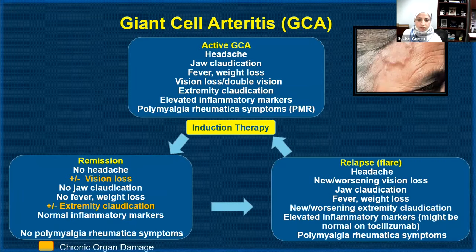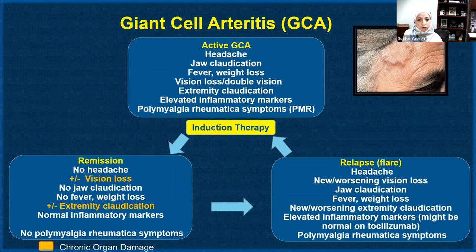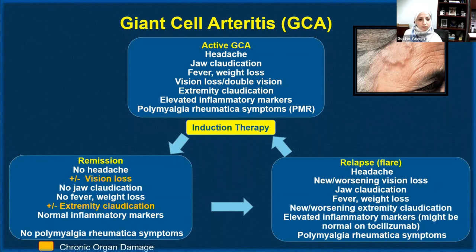Giant cell arteritis (GCA) is the most common form of primary systemic vasculitis in the United States. Patients with active GCA may experience temporal headaches, jaw claudication (jaw pain and fatigue while eating), fever, weight loss, painless vision loss or double vision, arm or leg claudication during activities, and elevated inflammatory markers such as sedimentation rate or C-reactive protein. They may also have an additional condition called PMR (polymyalgia rheumatica), causing stiffness and pain in the shoulders and hips.